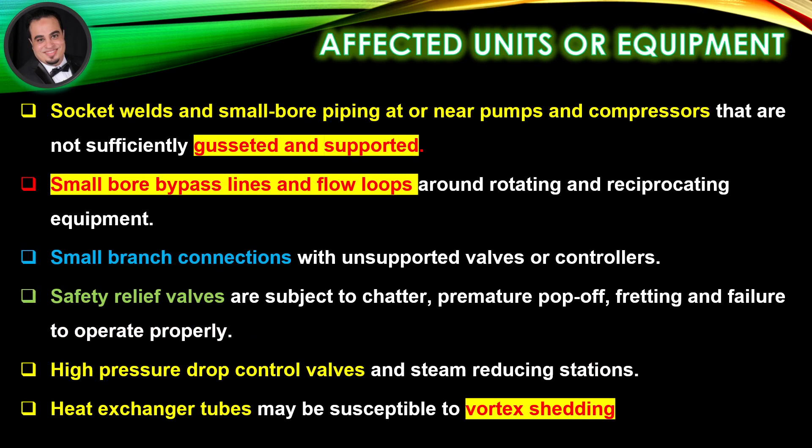Affected units or equipment include: socket welds and small-bore piping at or near pumps and compressors that are not sufficiently gusseted and supported; small-bore bypass lines and flow loops around rotating and reciprocating equipment; small branch connections with unsupported valves or power controllers; safety relief valves subject to chatter, premature pop-off, fretting, and failure to operate properly; high-pressure drop control valves; steam reducing stations; and heat exchanger tubes, which may be susceptible to vortex shedding.